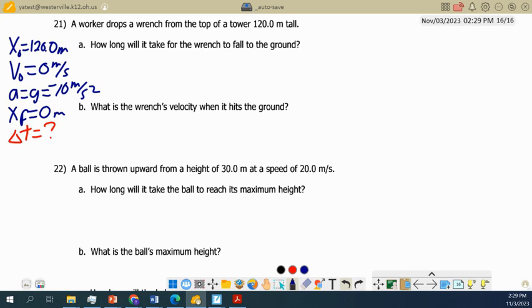If you look through your formula sheet, there's one in the bottom left: xf equals x0 plus v0*t plus one half a*t squared. Let's go ahead and plug in our values. xf is zero, x0 is 120, v0 is zero so this middle term drops out.